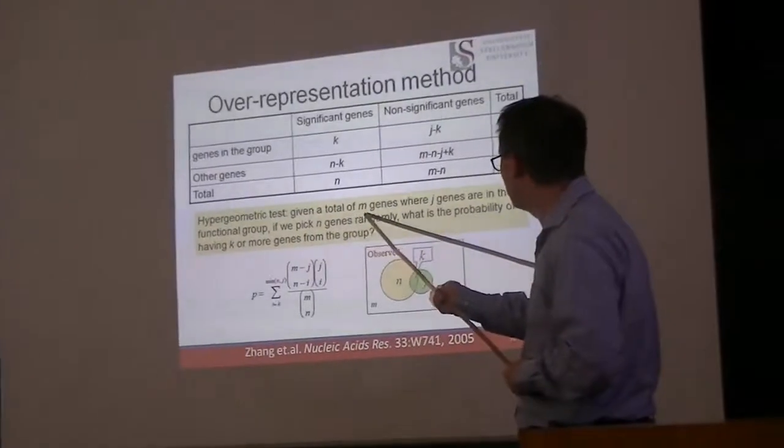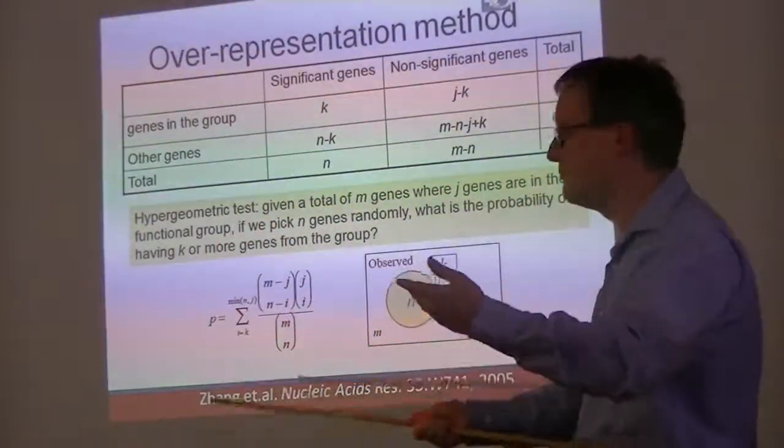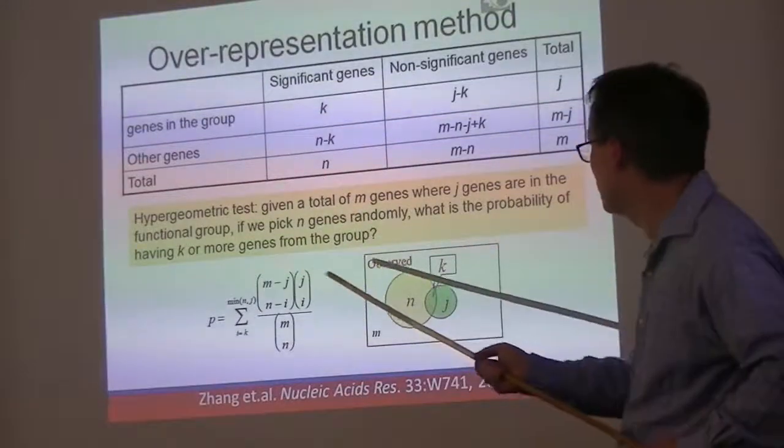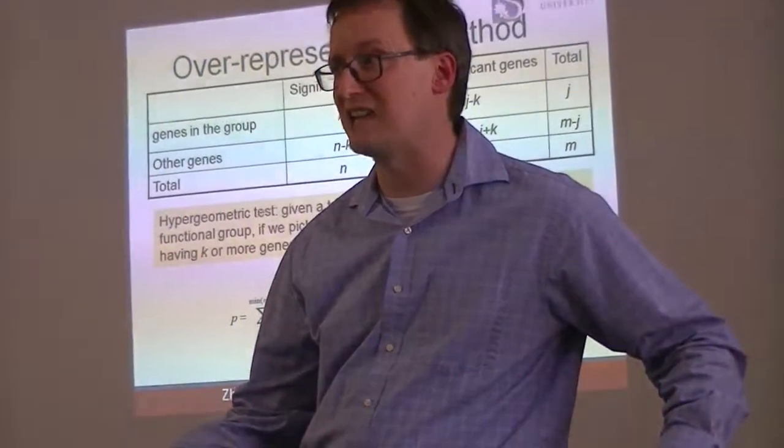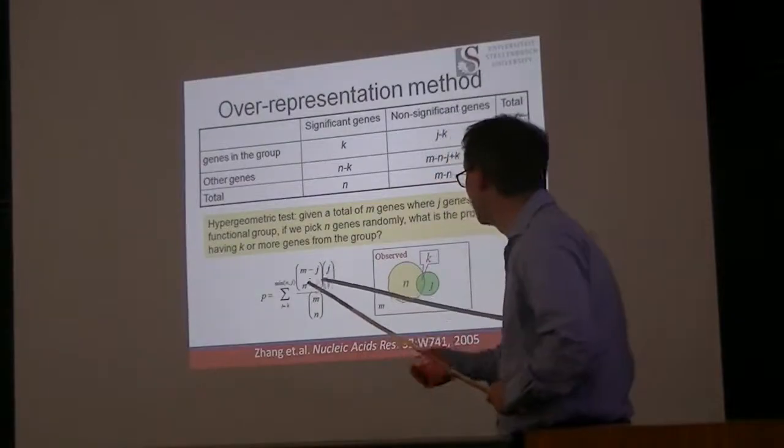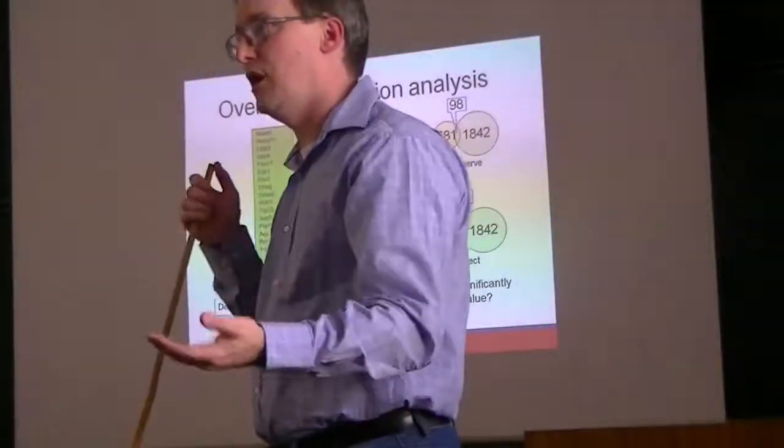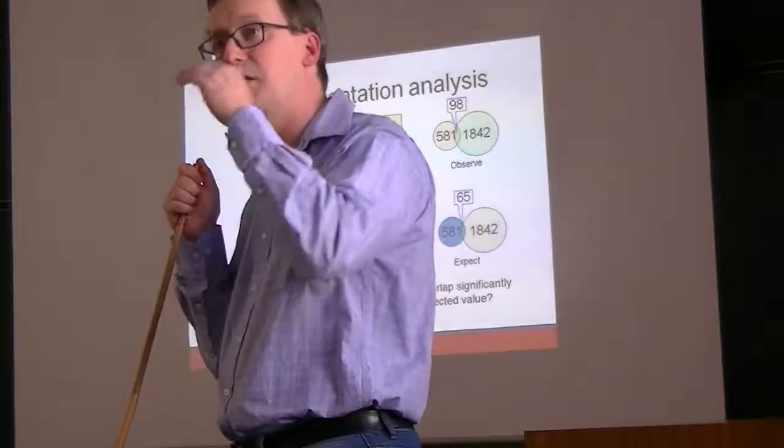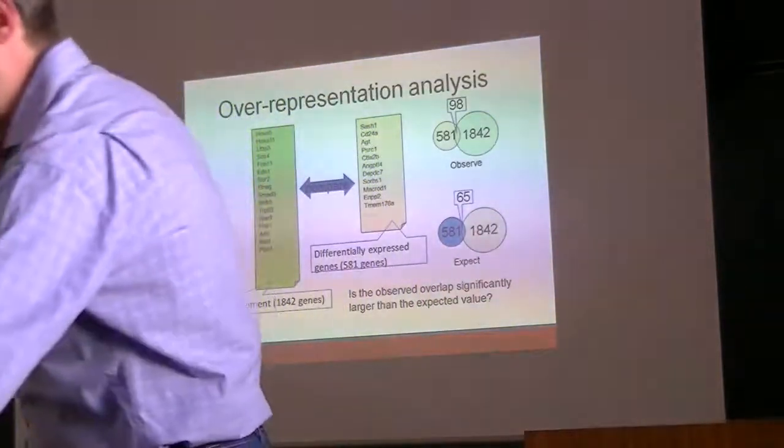The over-representation method produces a contingency table in order to give us a number on this score. We've been given a total of M genes where J genes are in the functional group. J of the M are found to be associated with a particular pathway. If we were to pick these N genes, pick N genes randomly from this collection, what's the probability that we would have K or more from the group? You may have remembered I talked a little bit about Fisher's exact test based on the hypergeometric distribution a couple days back. This is one of the ways that this can play out.